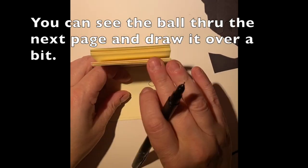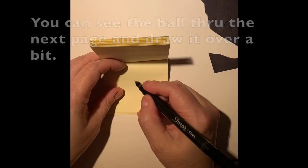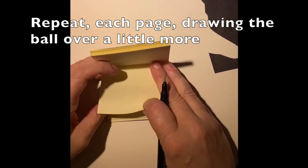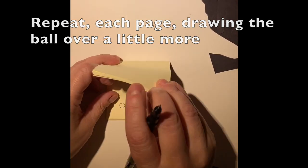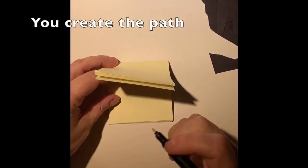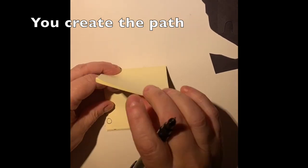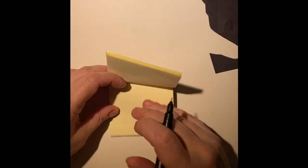So you go to the bottom page of your post-it and you can draw a ball. Then when you pull the next page over it, you can actually see the shadow of what you drew before showing through. Then you move over and draw the ball a little further over, turn the next page, and further over.